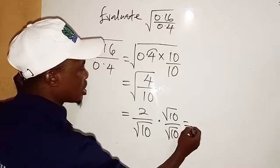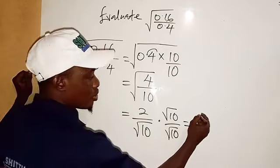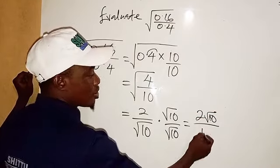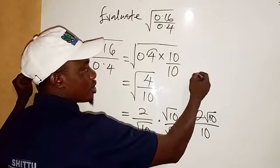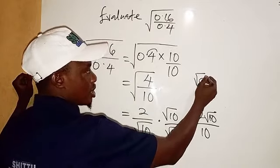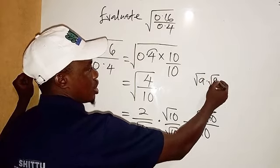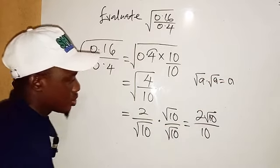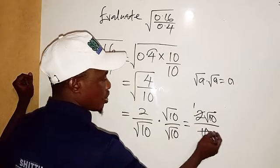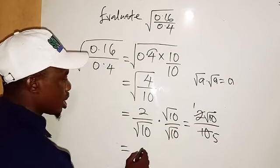We need to multiply both numerator and denominator by root 10. From there, 2 times root 10 will give us 2 root 10, divided by root 10 times root 10, which gives us 10. We have the fact from surds that says root a times root a equals a. So root 10 times root 10 is 10. Now 2 divides into 10 five times, so we have root 10 divided by 5, and that's the solution.